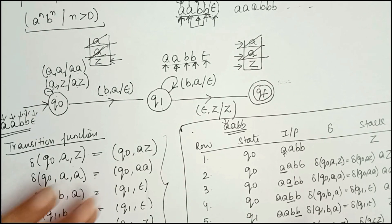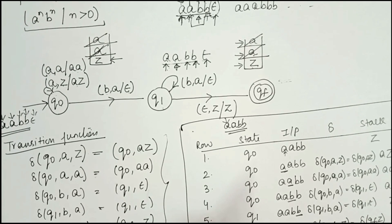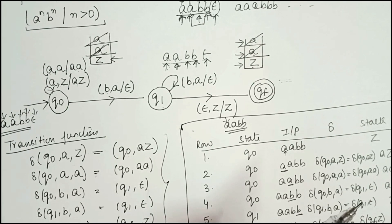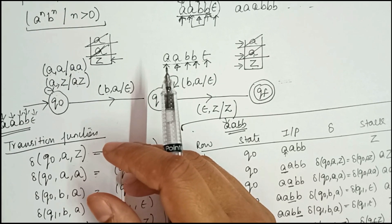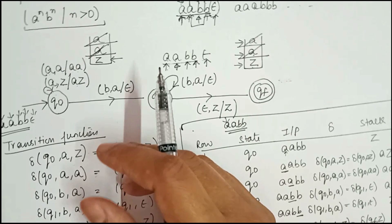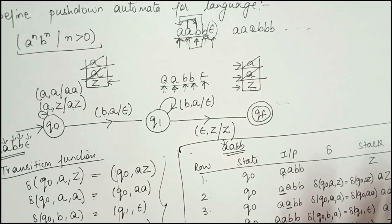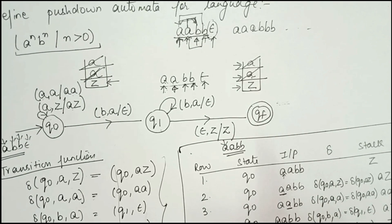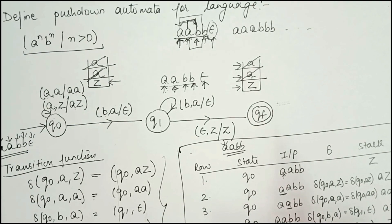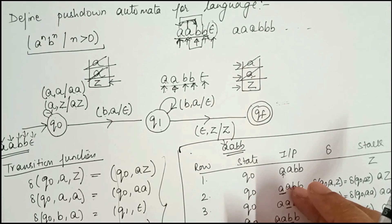This problem is a deterministic pushdown automata because there is only one move for a state on every input symbol and stack symbol. In non-deterministic PDA, there would be more than one move for a state on any input and stack symbol. It is not always possible to convert a non-deterministic PDA to a deterministic PDA. I hope you understood this clearly — if you have any doubt, ask in the comments. In my next video, I will explain a non-deterministic finite automata example.